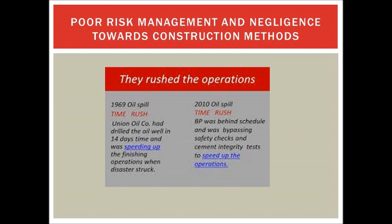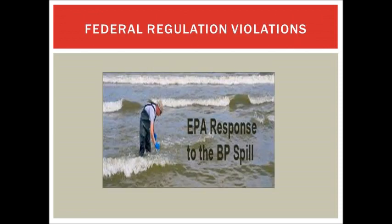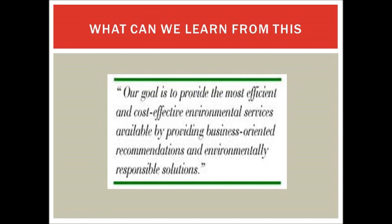According to reports in the New York Times, the main cause of this devastating spill was poor risk management, last-minute changes, and negligence towards critical construction methods. There were federal regulation violations that required BP and its contractors to take safety measures, and they failed to do so. Instead of playing a blame game, we must not compromise on the quality and construction of these oil platforms. Companies must comply with environmental and federal regulations.